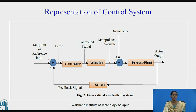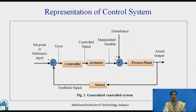Let us see the generalized control system. The generalized control system consists of a controller, actuator, sensor, process or a plant, reference input, and reference output. A controller is used to control the system. The actuator converts the control signal into a power signal. The process or plant is itself to be controlled, and the sensor is used for measurement purposes.